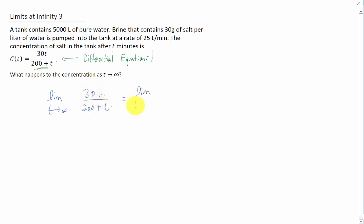That's 30 over 1. If you wanted to do this in a slightly more technical way, you could divide the numerator by T and divide the denominator by T, and you would get in the numerator just a 30. In the denominator, you would get 200 over T plus 1.